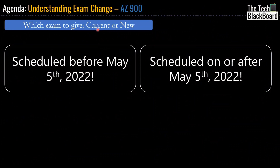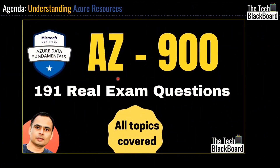Let me share my opinion on whether you should take the current exam or the new one. If you have already scheduled your exam before 5th of May, I don't see any reason to stop and wait for the new exam structure. However, if you are still in the preparation phase or your exam is scheduled after 5th of May, you must check out the new exam course content. I have already created an AZ-900 exam series with 191 real exam questions and answers, and will soon release a new series matching the changed course content.